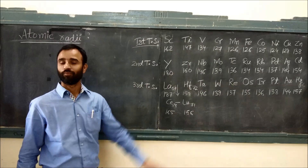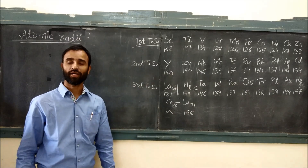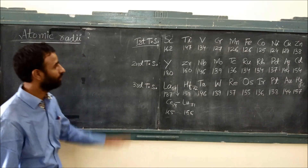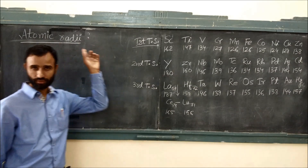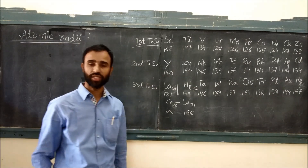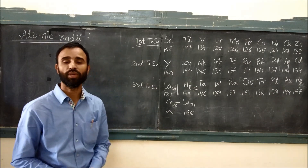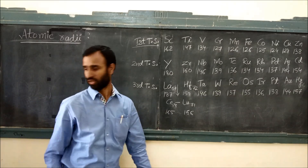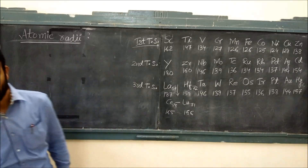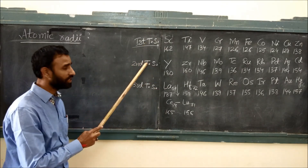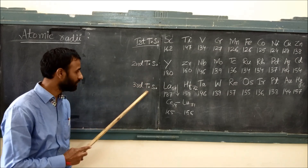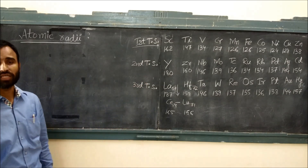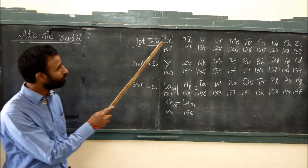Hi, welcome back. Today we will learn variation in atomic radii of D-block elements. These are the transition series: first transition series, second transition series, and third transition series.